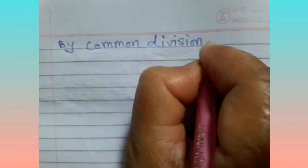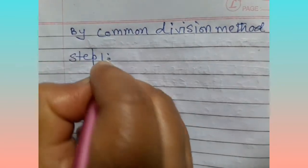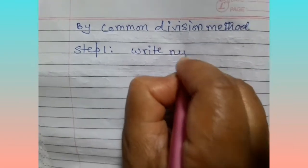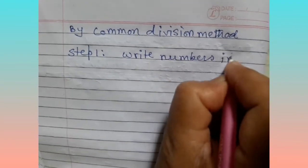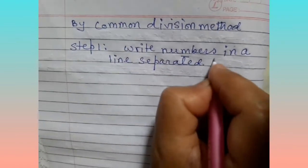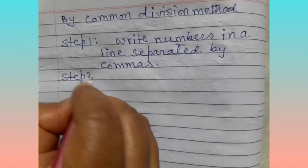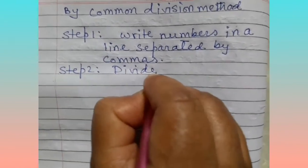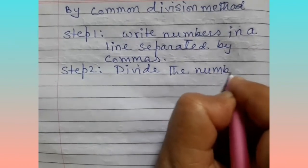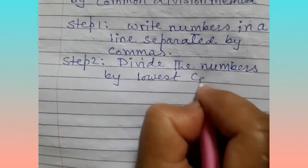Find out LCM by common division method. In this method, Step 1: write the numbers in a line separated by a line. Step 2: divide the numbers by the lowest common prime factor.